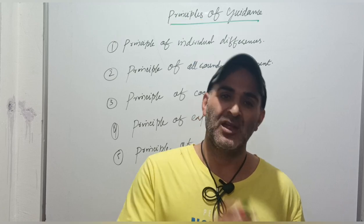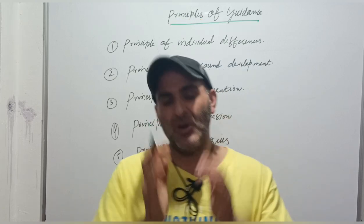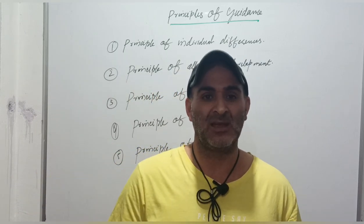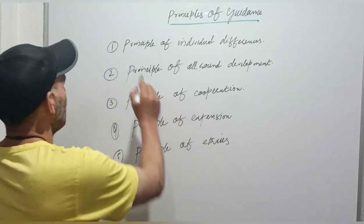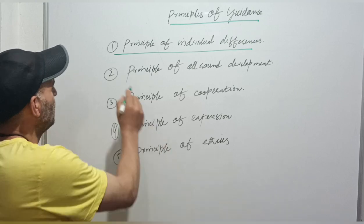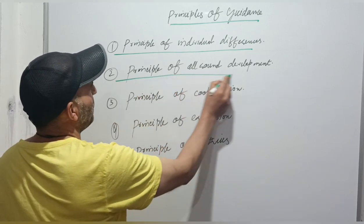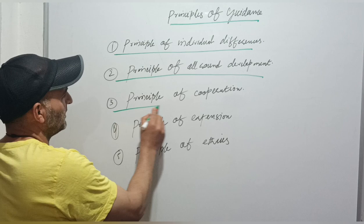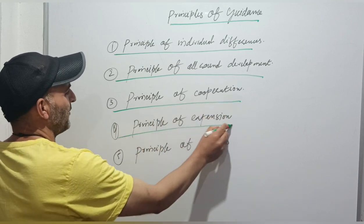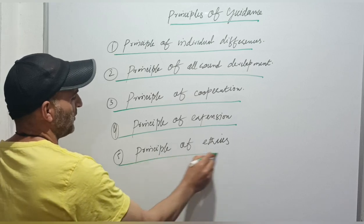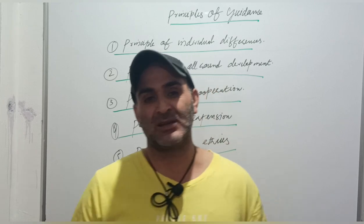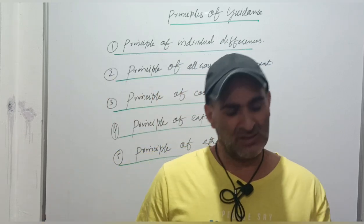For 'Principles of Guidance,' first you should have a conceptual framework in your mind about which principles are included. For example: number one — Principle of Individual Differences; number two — Principle of Overall Development; number three — Principle of Cooperation; number four — Principle of Extension; number five — Principle of Ethics. Dear students, students make a mistake here — they write the first principle in detailed form.